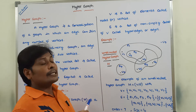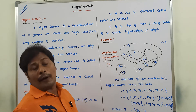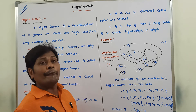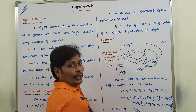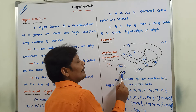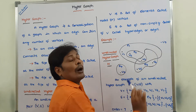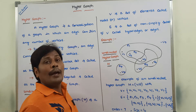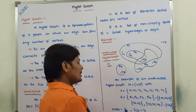What is the order of this undirected hypergraph? The order is the number of vertices or nodes. There are seven vertices: V1, V2, V3, V4, V5, V6, and V7. Hence, the order of this undirected hypergraph is equal to 7.